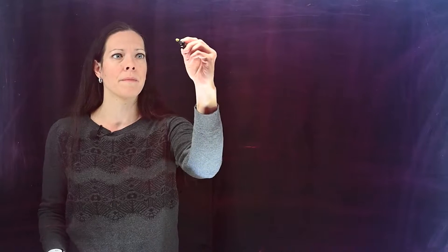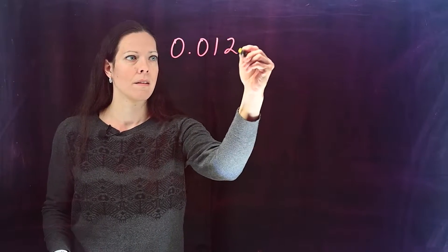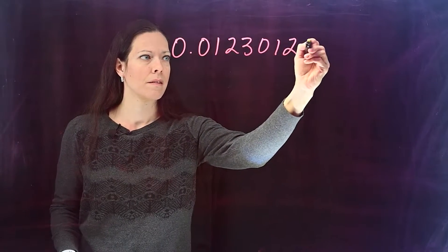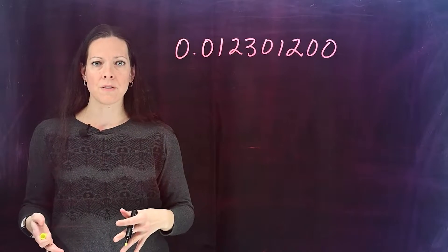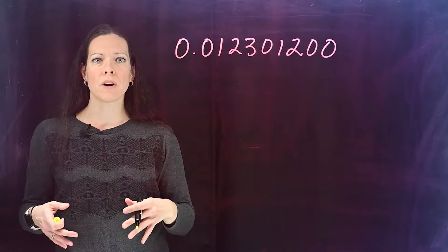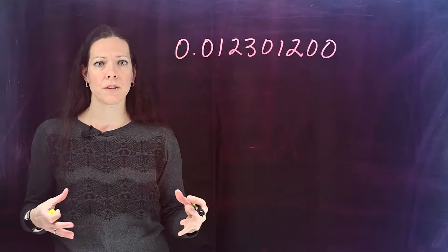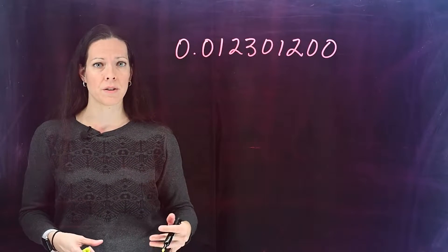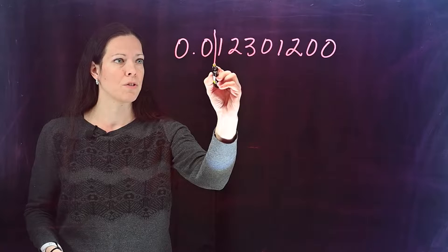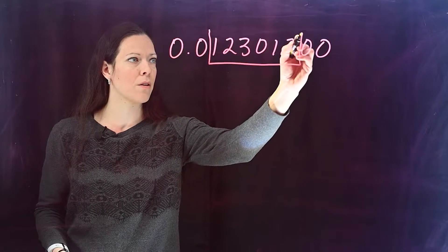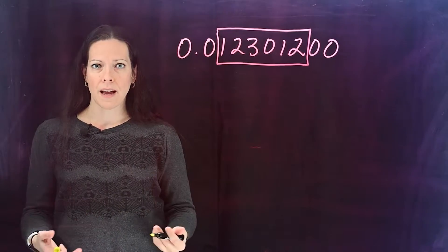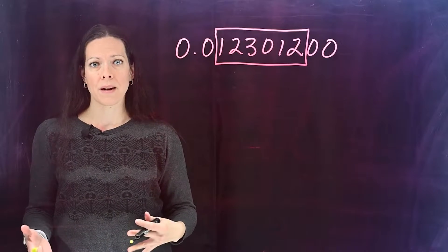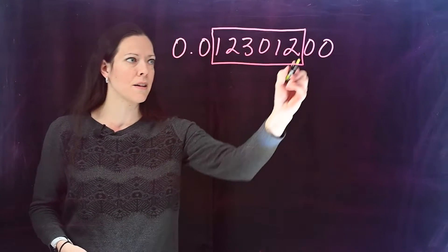With the box and dot method, we're going to look at a number and begin with the leftmost non-zero digit, and draw a box around all of the non-zero digits all the way to the rightmost non-zero digit. So we start here on the left and draw the box all the way to the right. If there is a dot or a decimal point present, then we're going to box the end zeros.